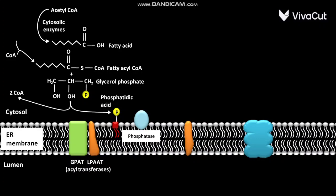The phosphatidic acid in the presence of phosphatase is converted into diacylglycerol with the release of Pi.